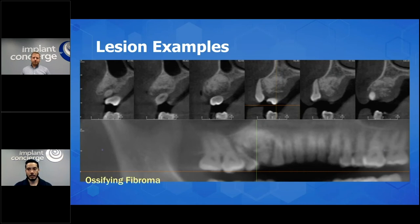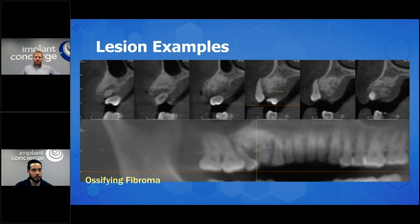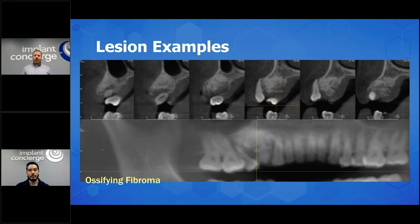Submissions: odontoma, ameloblastoma, ossifying fibroma, osteogenic sarcoma, osteosarcoma, multiple myeloma, Pindborg tumor, fibrous dysplasia. Everyone was in that category — thinking it was a neoplasm, benign or malignant. You're all in the right category. It's not a cyst.